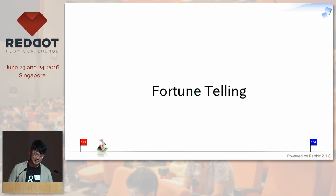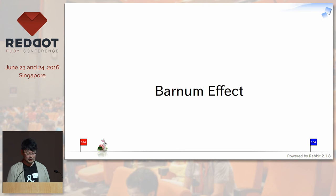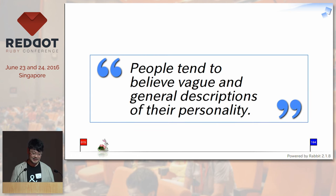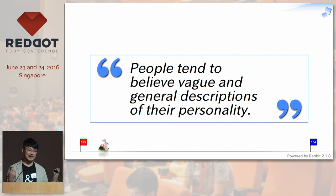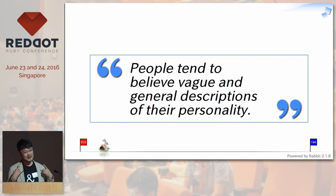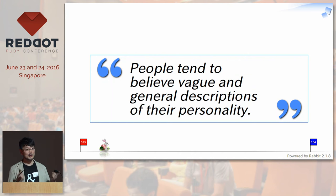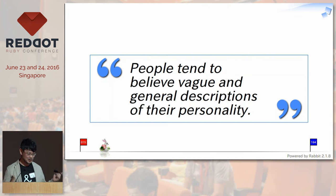It's kind of like fortune telling. We have the psychological effect named the Barnum Effect, which is where people tend to believe vague and general descriptions of their personality. So if you are blood type A and you are told you are a very organized person, you are very easy to believe that kind of personality description.